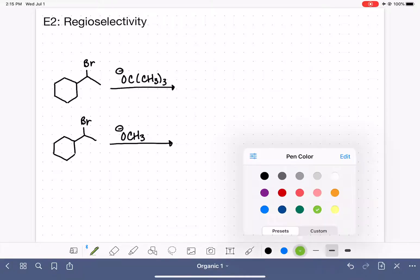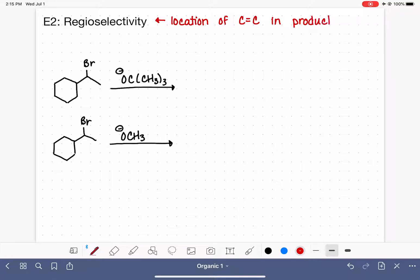This video is going to go over the regioselectivity of the E2 mechanism. Regioselectivity is referring to the location of the carbon-carbon double bond in the product, or products, if more than one is made, of the E2 reaction. So when we're studying the regioselectivity of E2, what we're studying is where does the carbon-carbon double bond end up in the molecule.